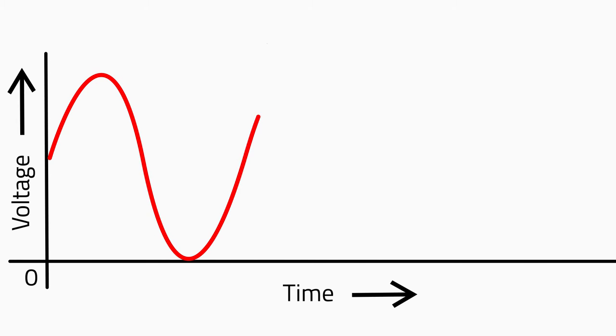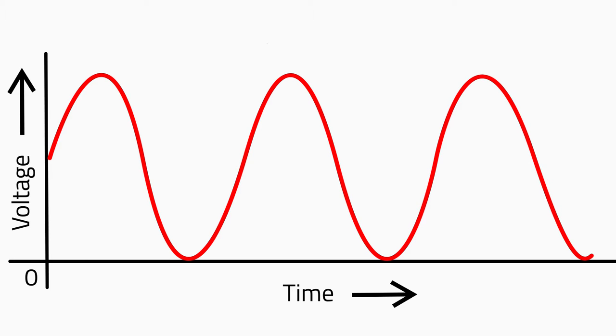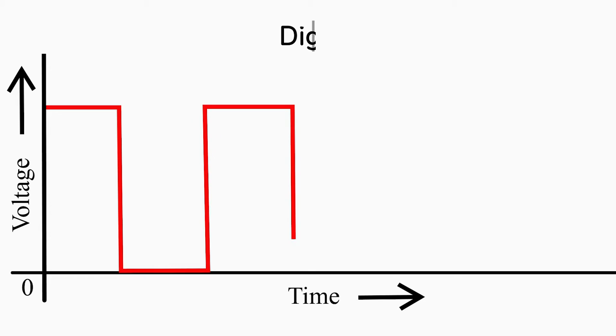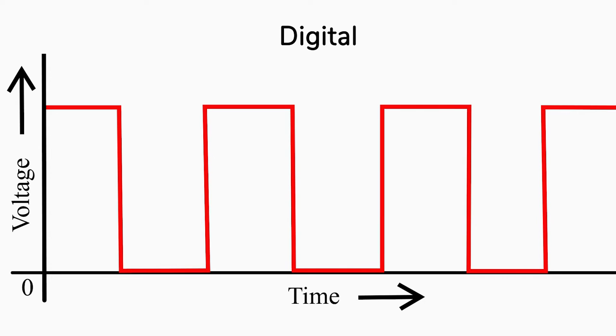An analog signal is a signal that represents all of the possible values in a given range as it varies with respect to time — it is analogous to the time-varying quantity it represents. On the contrary, a digital signal represents a quantity as a series of discontinuous values and can represent only two values: high and low. An LDR is an analog device.